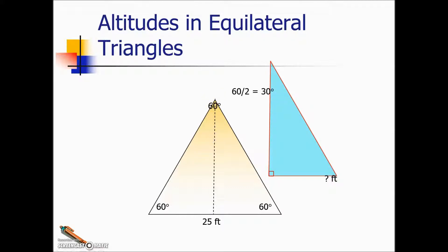The opposite side when an altitude is drawn gets bisected. So to find the length of this side of a right triangle, we'll divide 25 in half or by two to give us 12.5.